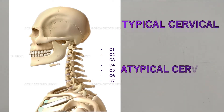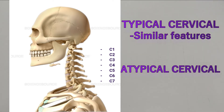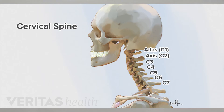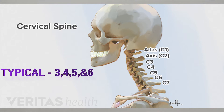Typical cervical vertebrae are those which present similar features, and atypical cervical vertebrae are those which present special features. The typical cervical vertebrae are the 3rd, 4th, 5th, and 6th cervical vertebrae.